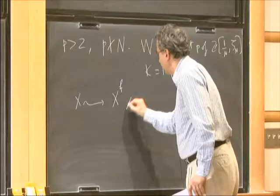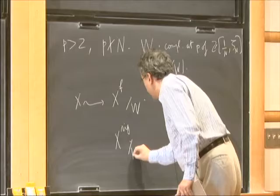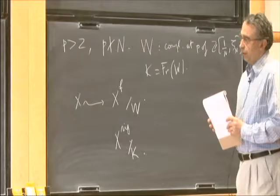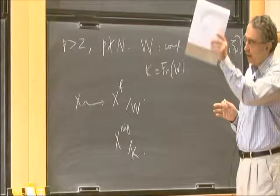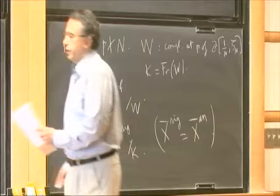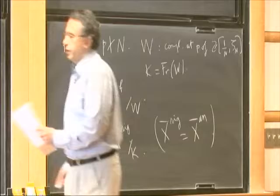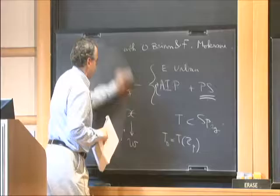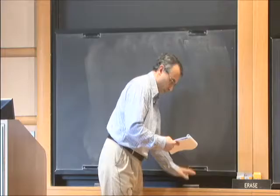To X we can associate a formal scheme X_f over W, and a rigid space X_rig over K. The problem of compactification I don't want to address in this talk, but I think we can do everything with compactifications — whether you take the analytic space or the rigid space.